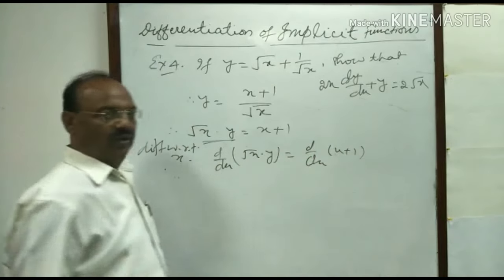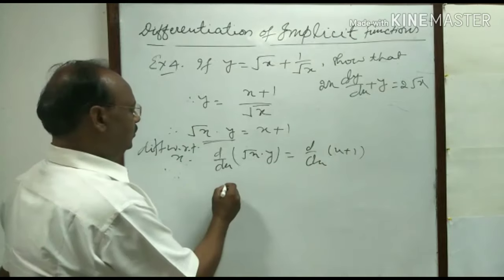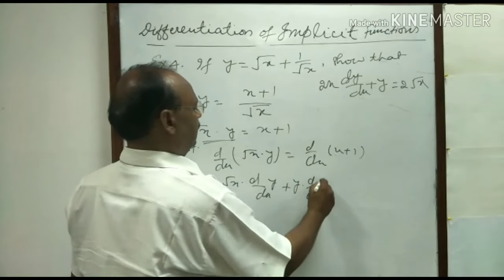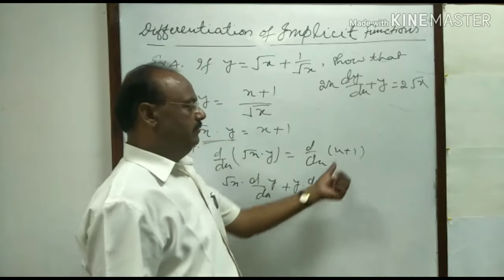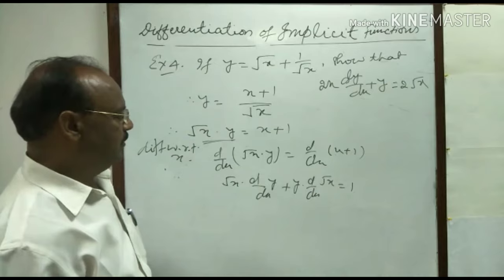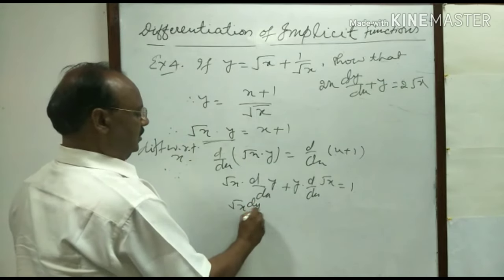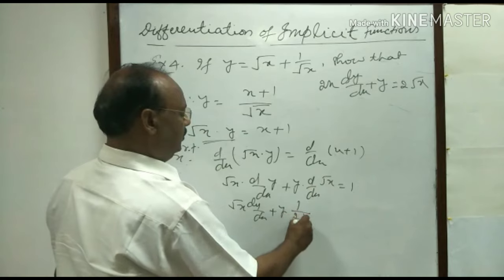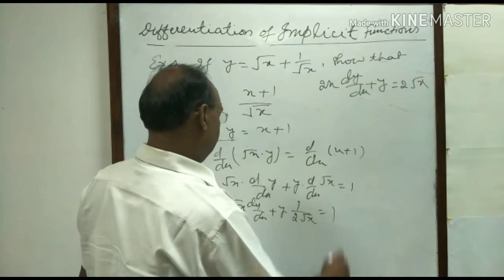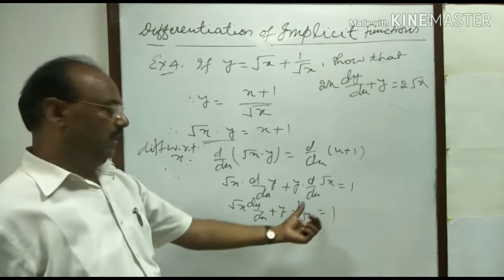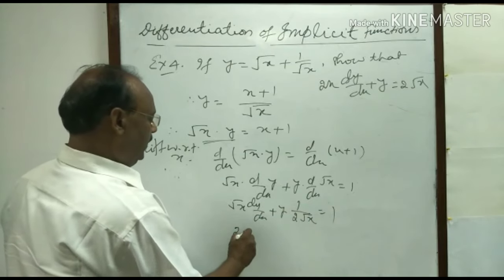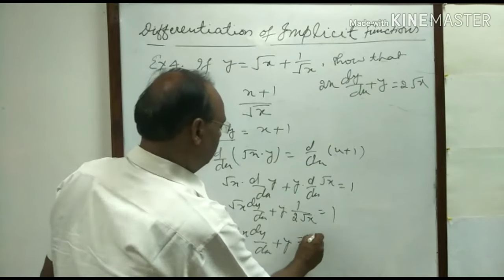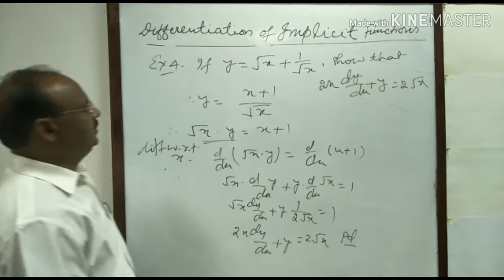Applying the product rule: first function times derivative of second, plus second function times derivative of first. Derivative of x plus 1 is 1. So this gives root x times dy/dx plus y times derivative of root x, which is 1 over 2 root x, equals 1. Now multiplying both sides by 2 root x, we get 2x dy/dx plus y equals 2 root x. This is the result and it has been proved.